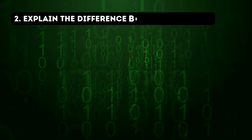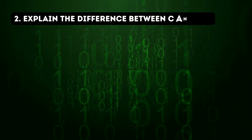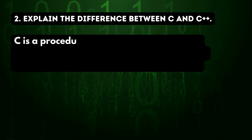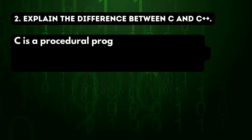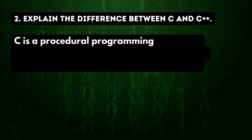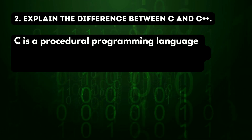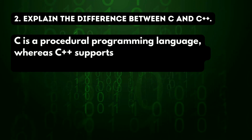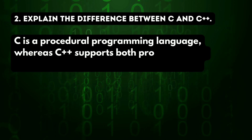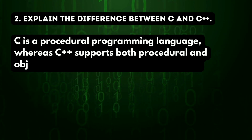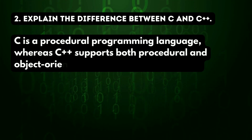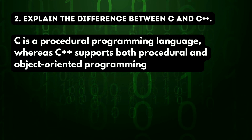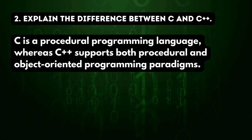Second question: explain the difference between C and C++. C is a procedural programming language, whereas C++ supports both procedural and object-oriented programming paradigms.